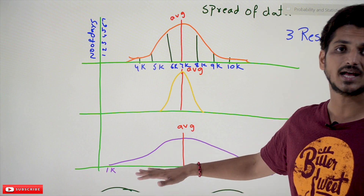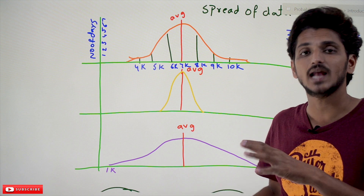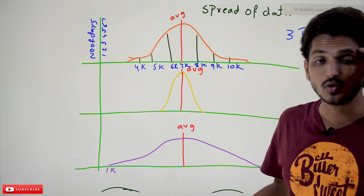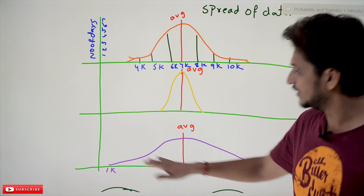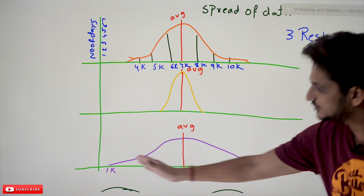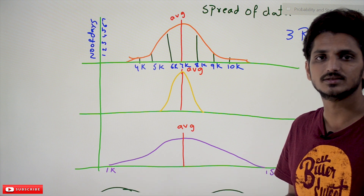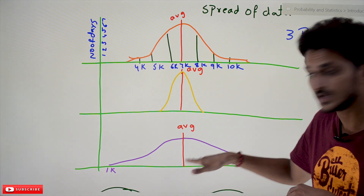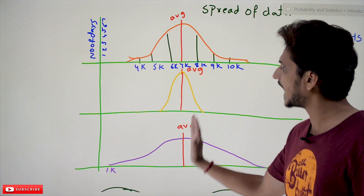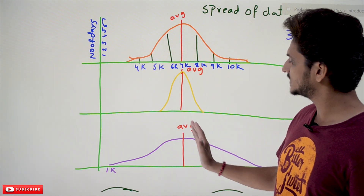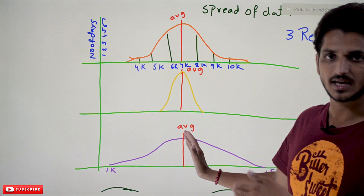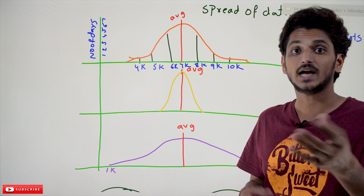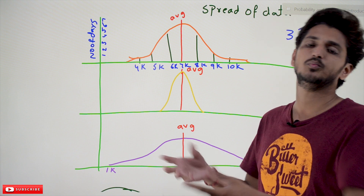That is the point you understand with the measure of spread — how volatile your data is. Measure of spread gives you the volatility, meaning the uncertainty of your data. You have to analyze much more on a restaurant with high spread because the business is not stable. Simply taking the average and saying each restaurant is getting 7k is not enough in data analysis. That's why measure of spread is very very important in statistics.